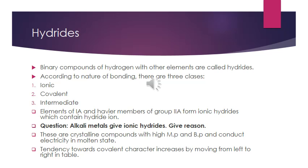Alkali metals give ionic hydrides because alkali metals, being group 1A, are strongly electropositive. With hydrogen, there is a large electronegativity difference, which is why they form ionic hydrides. Ionic hydrides are crystalline compounds with high melting and boiling points, and they conduct electricity in the molten state.